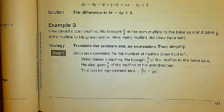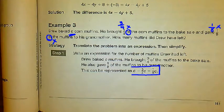Drew baked c corn muffins. So c is going to be our variable. Remember, we don't have to just have x's and y's. We can really have any variable we want. He brought 3 fourths of the corn muffins to the bake sale and gave 1 eighth of the muffins to his grandmother. So how many muffins did Drew have left? The first thing we have to do is write our expression. I see that he made c muffins, so that's what we're going to start with. Remember, of means to multiply. So we're going to have 3 fourths c and 1 eighth c. What we're doing is we're starting with c, and then we're going to subtract each of those other things because he is giving them away, so these would be minus, these would be negatives.